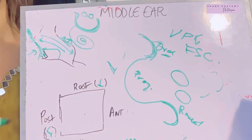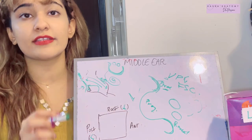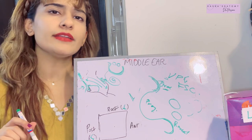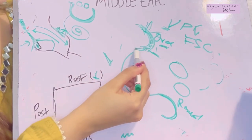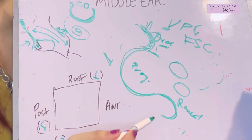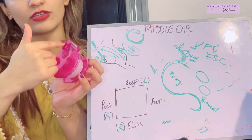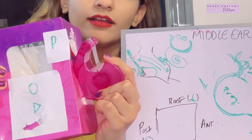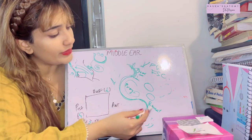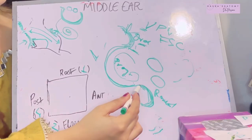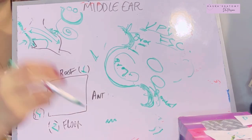Between the oval window and the round window is the promontory — a projection caused by the first coil of the cochlea bulging into the medial wall. The round window is called the fenestra cochleae because the scala tympani of the cochlea communicates through it. FSC: fenestra cochleae. There are also two prominences on the medial wall.